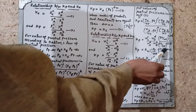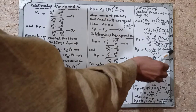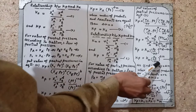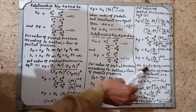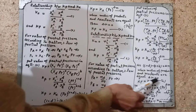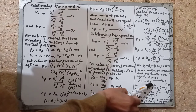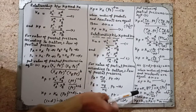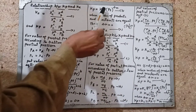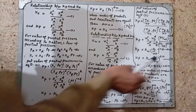Since c+d are moles of products and a+b are moles of reactants, product moles minus reactant moles gives delta n. Therefore Kp = Kn × (PT/nT)^(Δn). When moles of products and reactants are equal, delta n = 0, so Kp = Kn. Summarizing all the relations we have studied: Kp = Kc(RT)^(Δn), Kp = Kx × PT^(Δn), and Kp = Kn × (PT/nT)^(Δn).